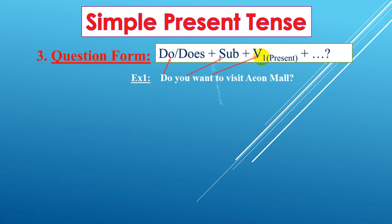Example number two: does she love you? We use 'does' here — do or does depending on the subject. Subject is 'she', so we use 'does'. 'She' is the subject, 'love' is verb one, 'you' is the object. And then we put a question mark.